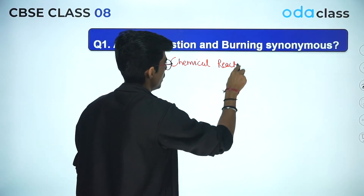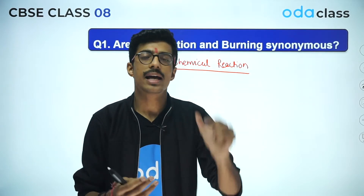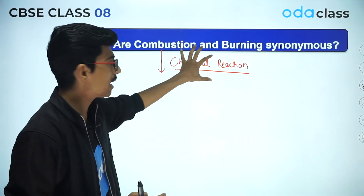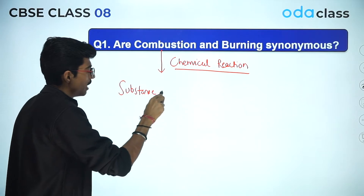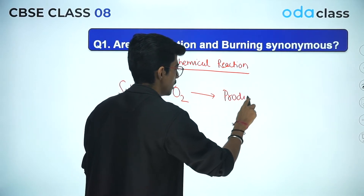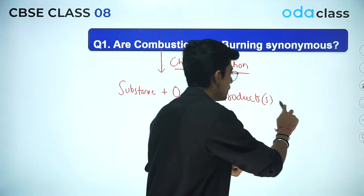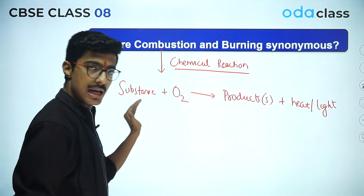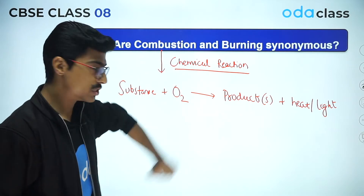What is a chemical reaction? All my intelligent kids know about this — it is a process of a chemical change. What is a chemical change? It is when some new substances are formed and the original identity of the substance is changed. That is known as a chemical change, and this process is a chemical reaction. Now, if that substance reacts with oxygen — they both are reactants — it reacts with oxygen to form different products.